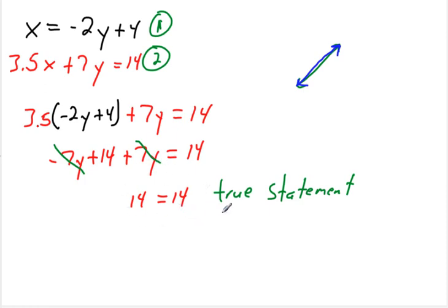This is what it looks like algebraically or with an equation. You get a true statement without a variable. Okay, so this means infinite solutions. Okay, or coincide, the lines coincide. So something like that.